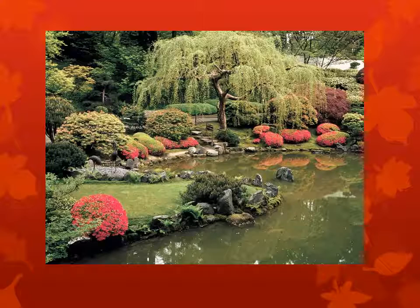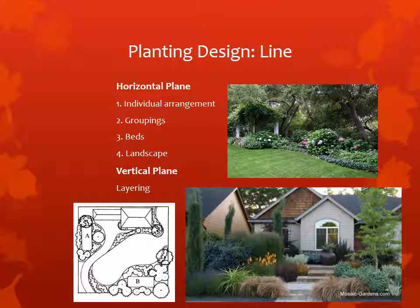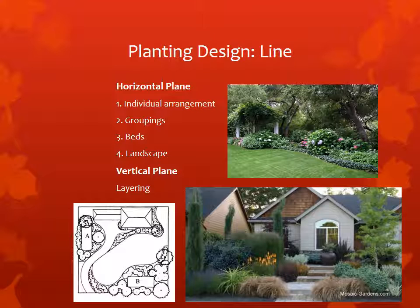The element of design called line is used primarily in the horizontal plane. This can be achieved with an individual arrangement of plants or plant groupings that will eventually grow out to define the landscape bed and the landscape as a whole. However, you can also create vertical planes, which is done by layering or by using vertical elements such as fencing or the trunks of trees.